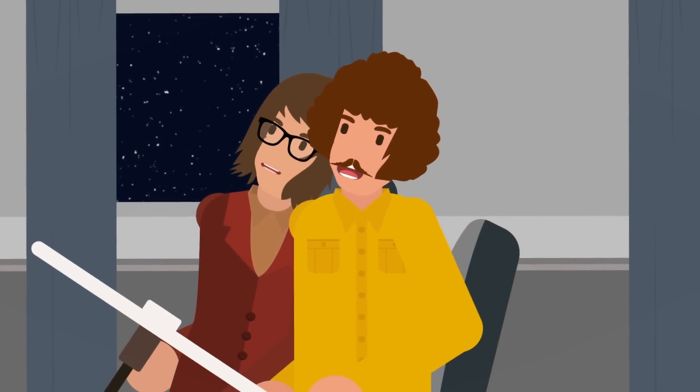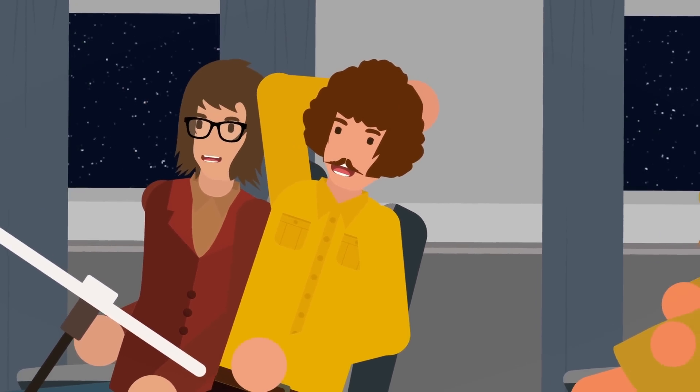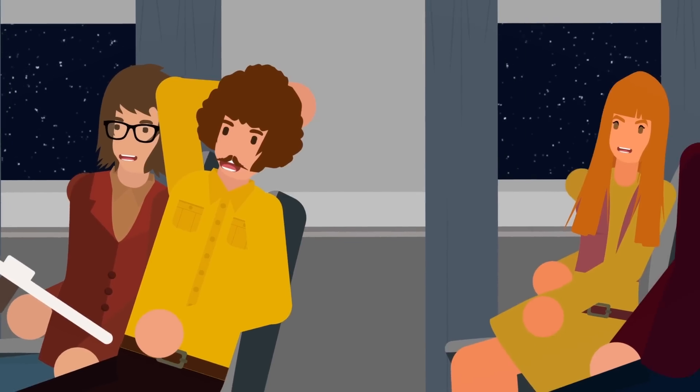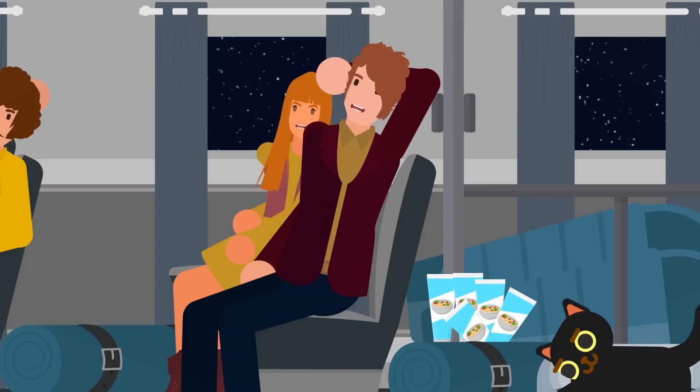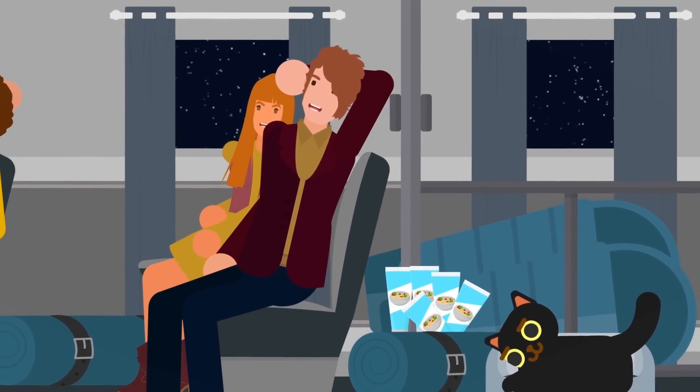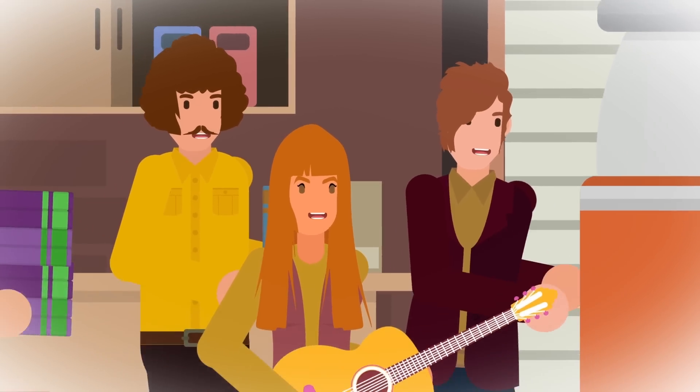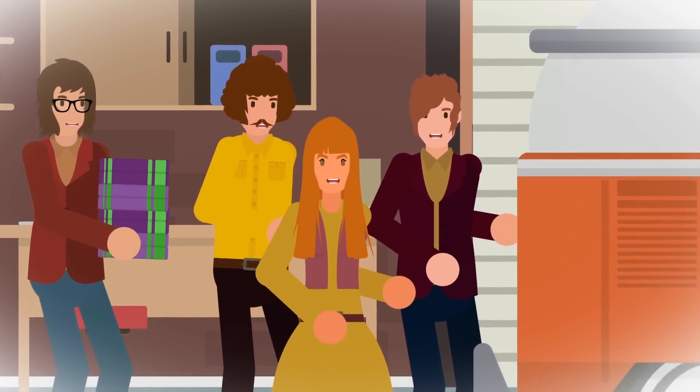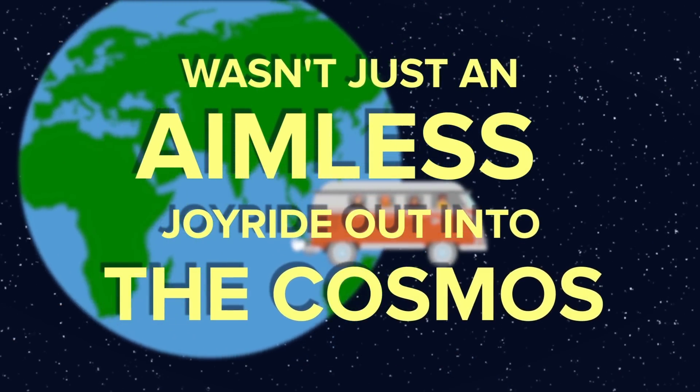The bus had everything on board that these intergalactic travelers could possibly need, from bedrolls and pillows to sleep on, to enough dehydrated food to feed the four of them for three whole months in space. There was even room aboard the microbus for Susan's cat, Millie, as well as all the comforts of home. William and his friends packed bongos, a guitar, and countless books.